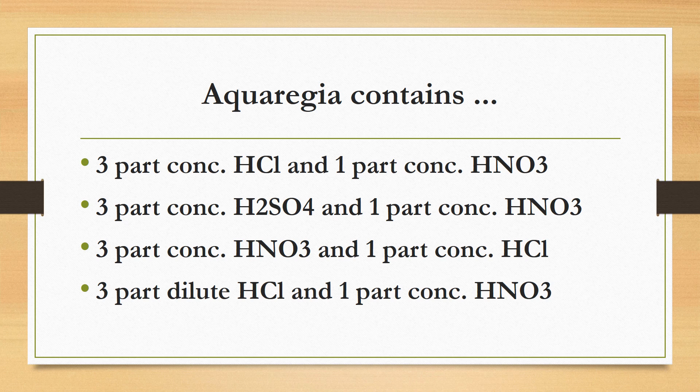Aqua regia contains: 3 parts of concentrated hydrochloric acid and 1 part of concentrated nitric acid; 3 parts of concentrated sulfuric acid and 1 part of concentrated nitric acid; 3 parts of concentrated nitric acid and 1 part of concentrated hydrochloric acid; or 3 parts of dilute hydrochloric acid and 1 part of concentrated nitric acid? The correct answer is 3 parts of concentrated hydrochloric acid and 1 part of concentrated nitric acid, in the ratio of 3:1.